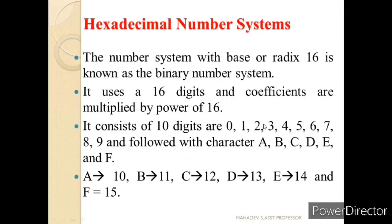Now let us understand hexadecimal number systems. The term hexadecimal means 16. Since decimal numbers have only 10 different digits, we need to represent the extra 6 digits using letters — alphabets A, B, C, D, E, F. A equals 10, B equals 11, C equals 12, D equals 13, E equals 14, and F equals 15. Adding these 6 alphabets to the 10 digits (0 to 9) gives us the hexadecimal number system, with a base or radix of 16.